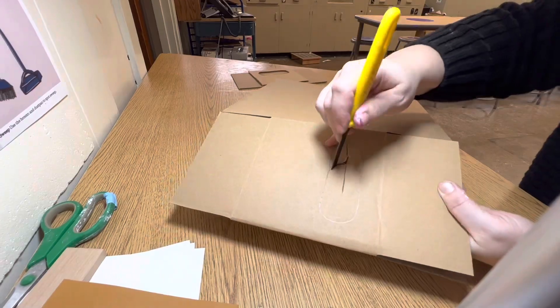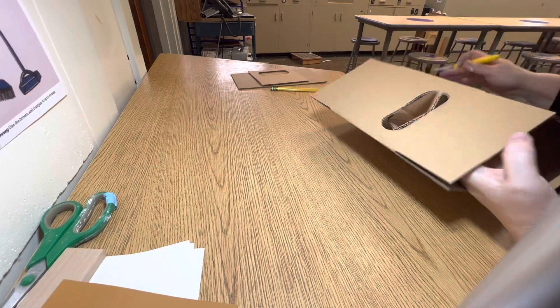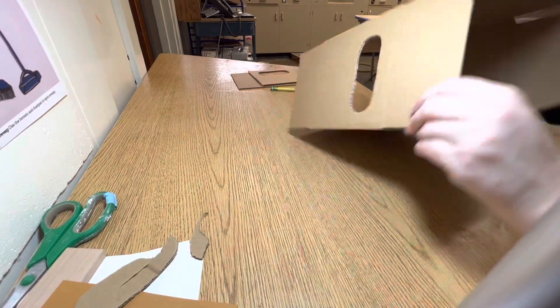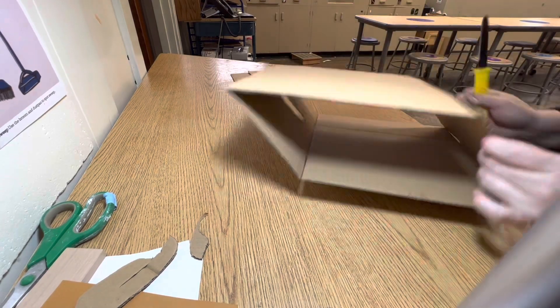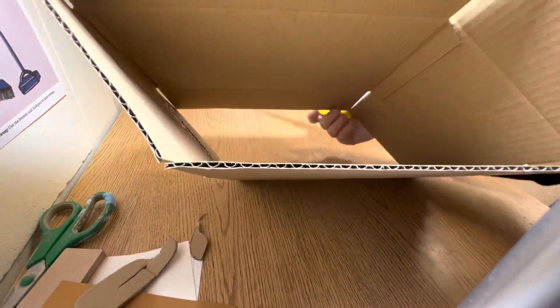So I'm using a sawing motion here with my canary knife or my cardboard knife and taking my time until I get it all out. So that's what the hole will look like on one end of your box. And I'm pointing out the tab right there that's holding the box together.